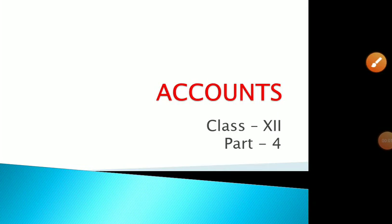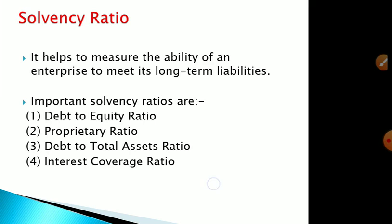In this video we are going to discuss the second type of ratios, such as solvency ratios. Solvency means the ability of an enterprise to pay its long-term debts or long-term liabilities. Generally, companies or firms borrow money from financial institutions or the public, so it is a concern of those lenders to check whether their investment is safe and whether the company is able to pay off its debt in the near future.